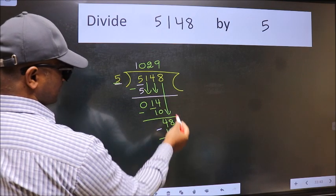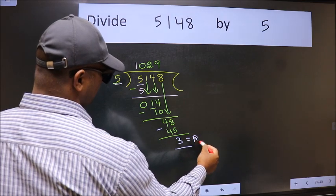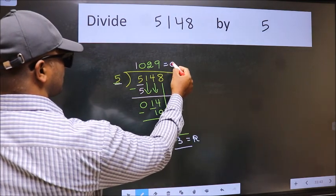No more numbers to bring it down. So we stop here. This is our remainder and this is our quotient.